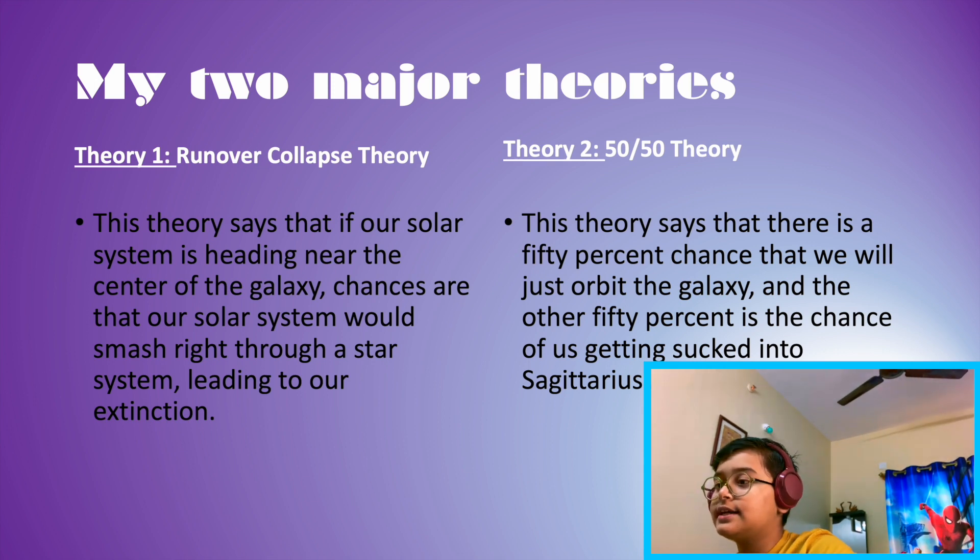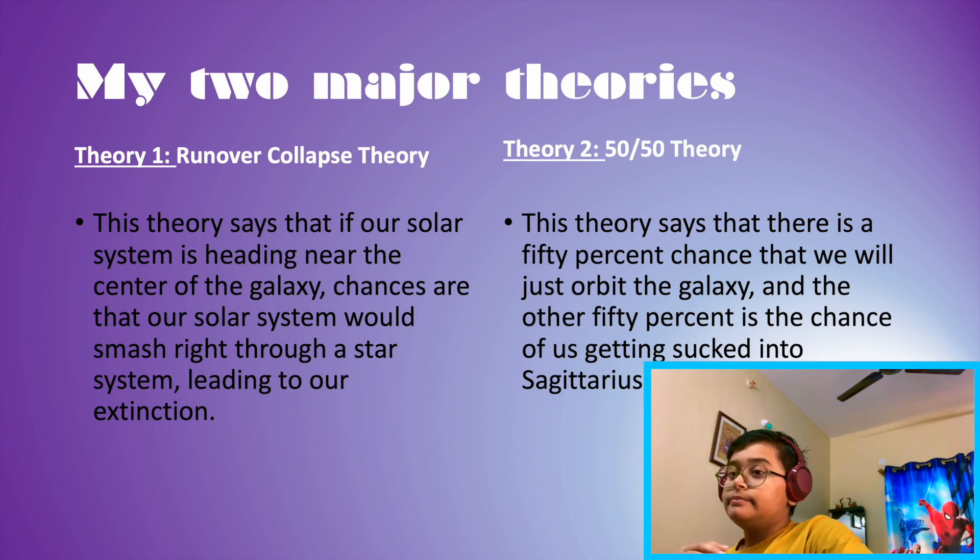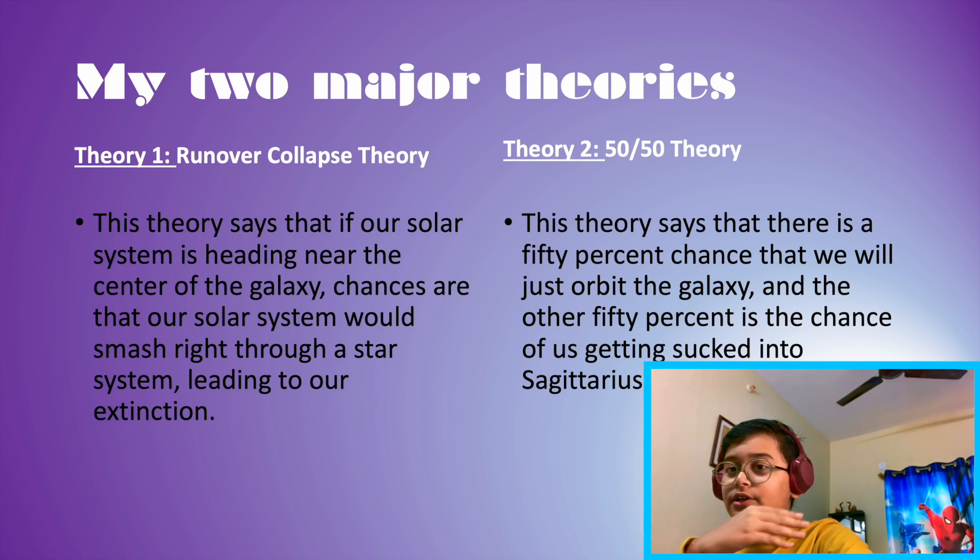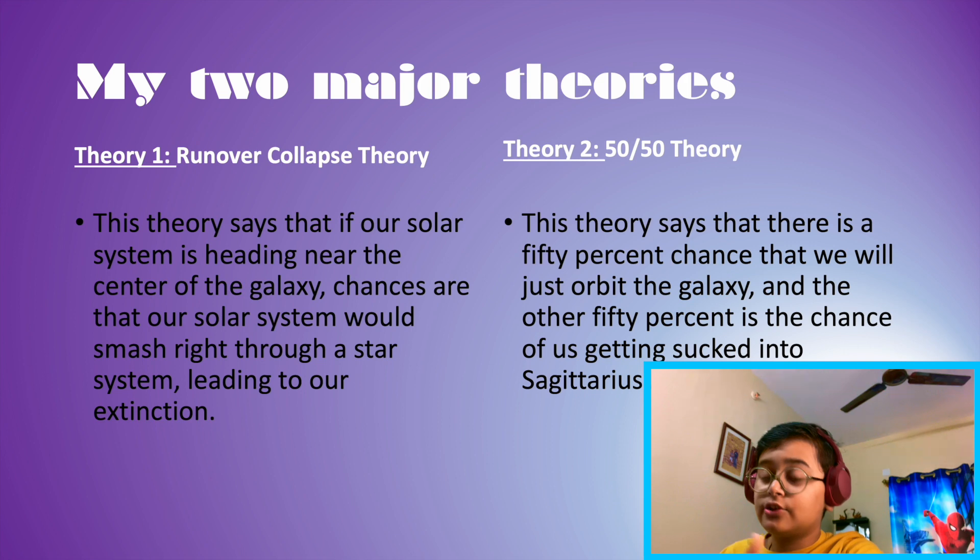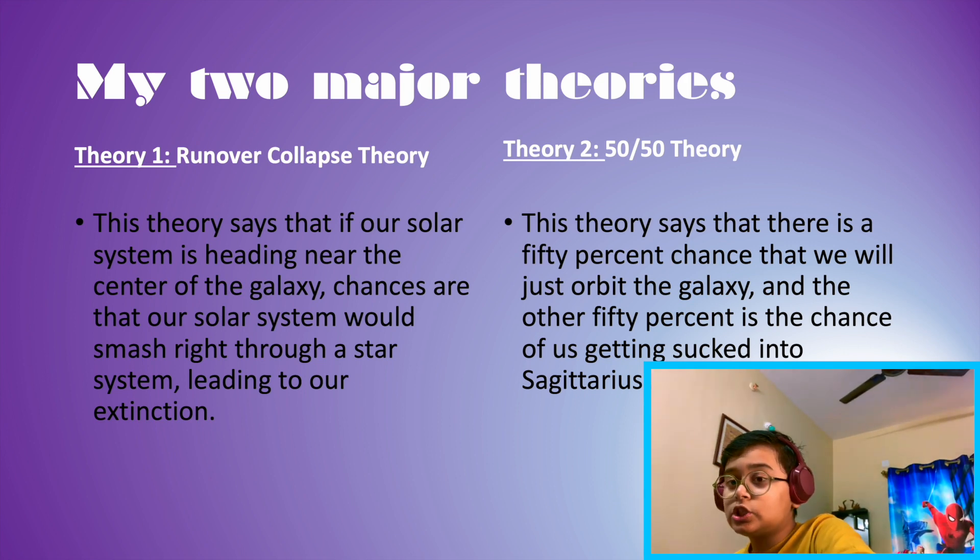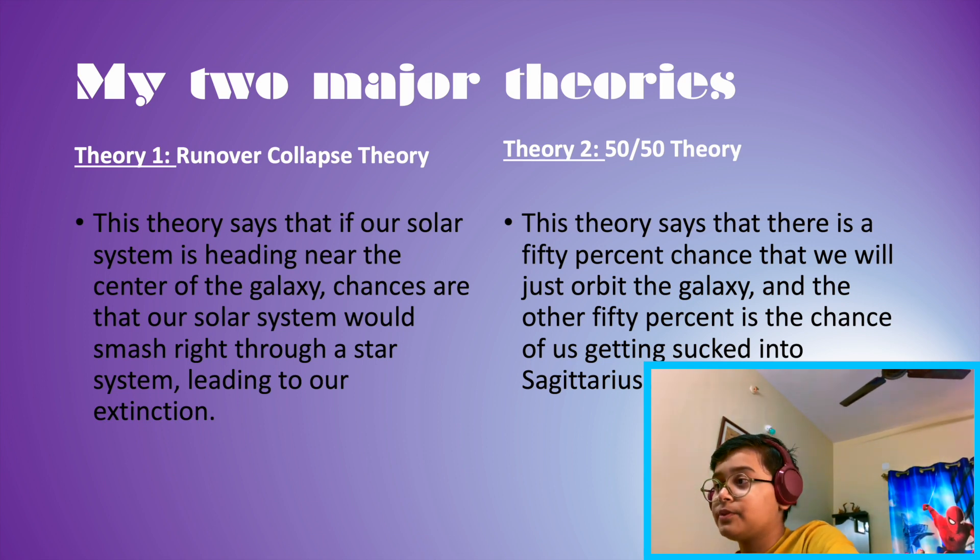Chances are that our solar system would smash right through a star system, leading to our extinction. So, if our solar system is moving towards Sagittarius A or the center of the Milky Way, that means technically the other star systems orbiting Sagittarius A, we might be colliding with them.